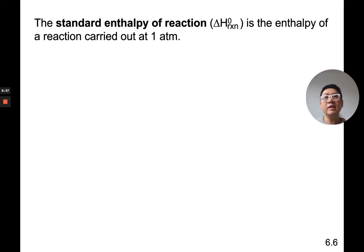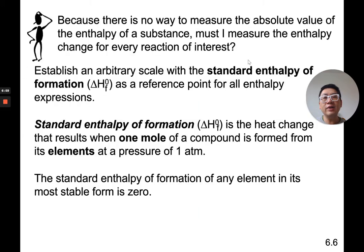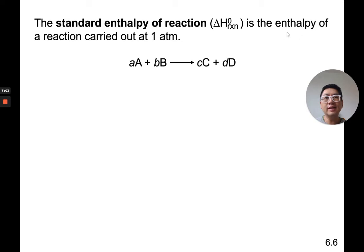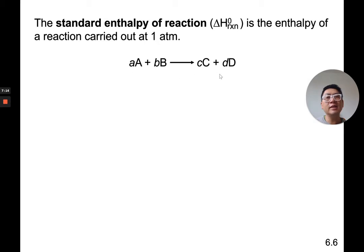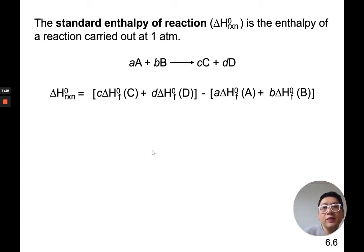It turns out the standard heat of a reaction — how much energy there is in a reaction, delta H of any reaction — can be calculated. Given an equation where A and B make C and D, where the lowercase a, b, c, d are the coefficients of the balanced equation, delta H of any reaction turns out to be: coefficient C times the heat of formation of C, plus coefficient D times the heat of formation of D, minus coefficient A times the heat of formation of A, plus coefficient B times the heat of formation of B.